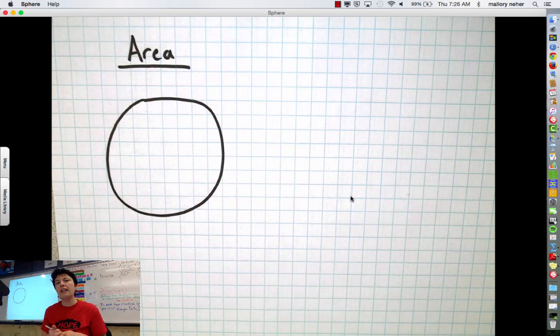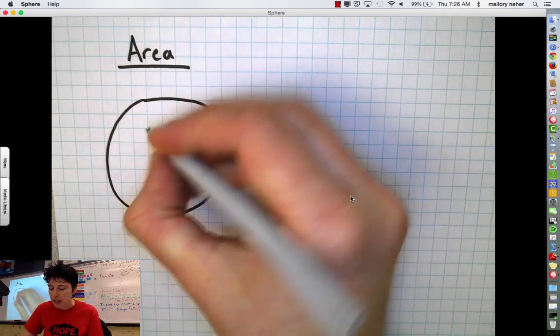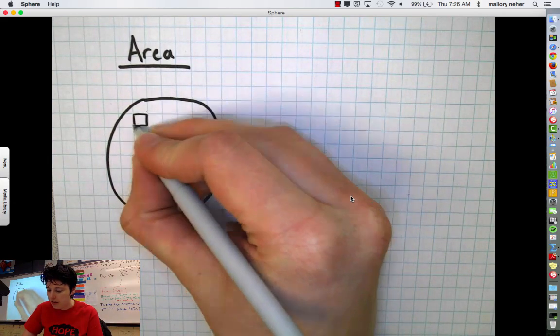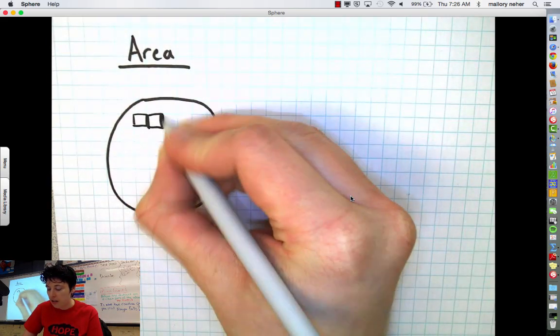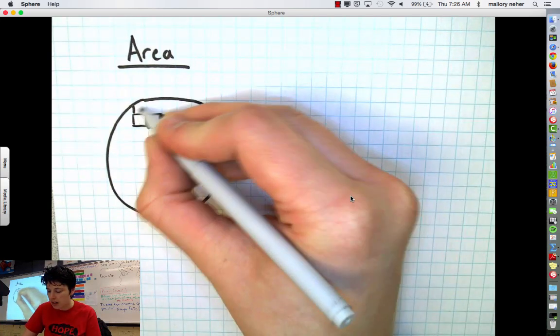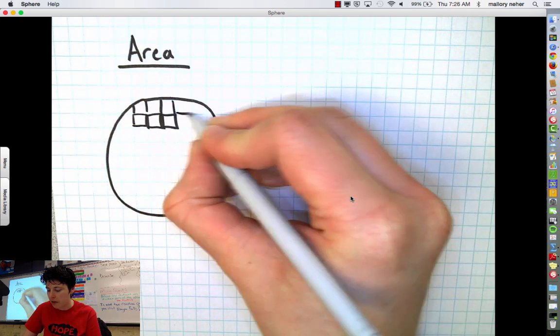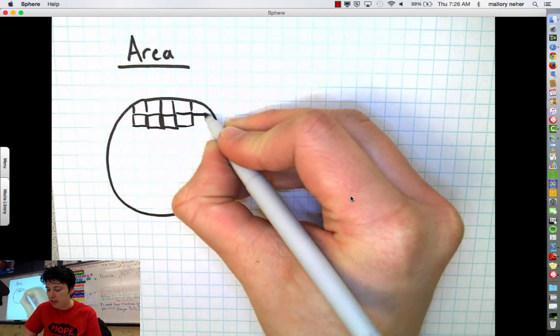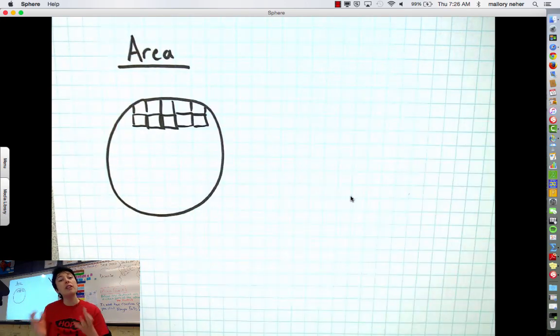Area is kind of interesting. Area is when you're trying to measure how many square units fit inside an object. So like, if I was to cut this circle up into lots and lots of little squares, I'm using my graph paper here, the question is how many little squares would fill up the circle?